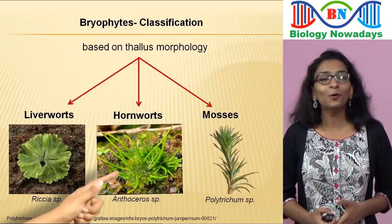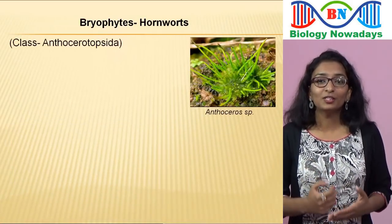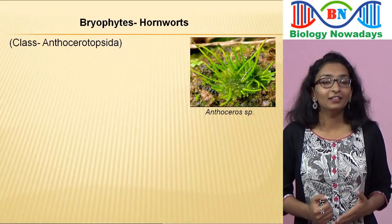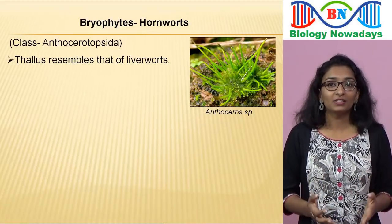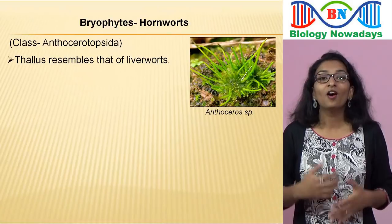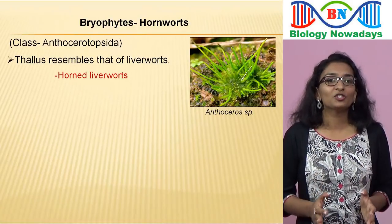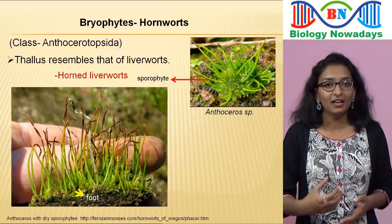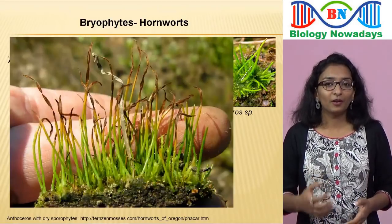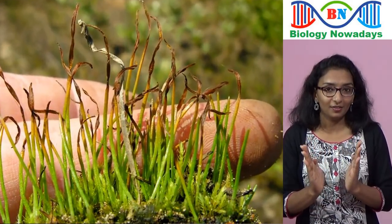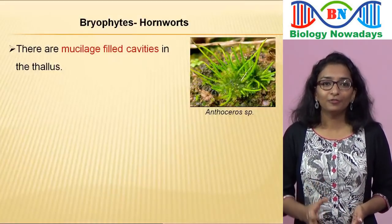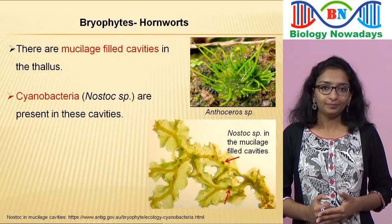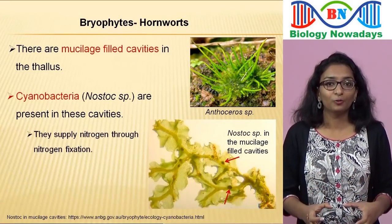Let's see the next group, the hornworts. They belong to the class Anthocerotopsida. Members belonging to the genus Anthoceros are examples of hornworts. Their thalli resemble those of liverworts, except that hornworts have horn-like structures arising from the flat plant body — and because of this they are called horned liverworts. The horn-like structures are their spore-producing bodies called the sporophytes. The sporophyte in hornworts consists of a foot and a long sporangium. When it gets mature, the sporangium splits longitudinally into two ribbon-like halves. In Anthoceros, there are mucilage-filled cavities in the thallus in which cyanobacteria like Nostoc are present. The cyanobacteria supply nitrogen to Anthoceros through nitrogen fixation.